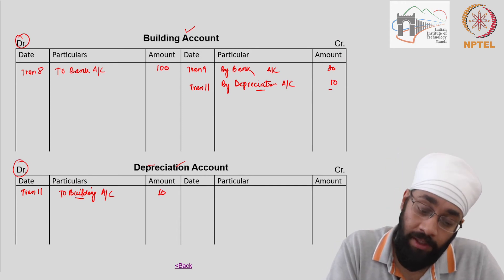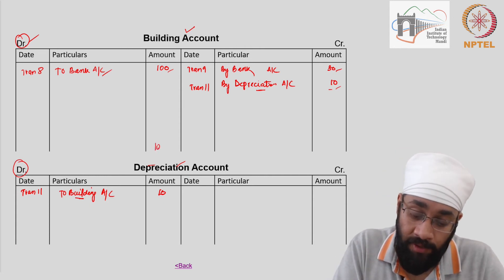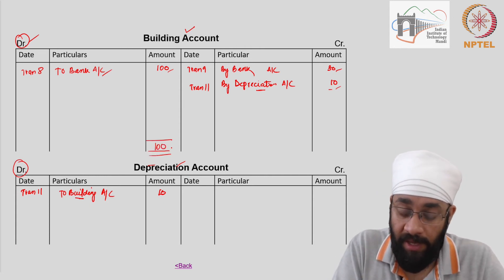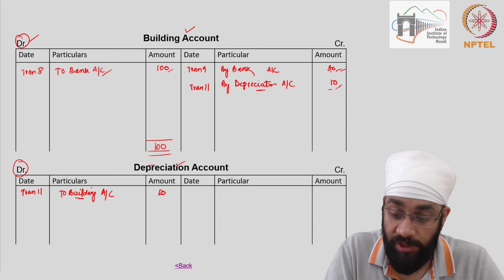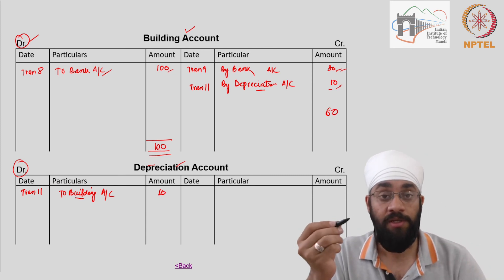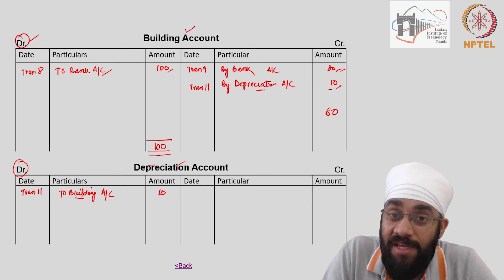So building account - on the debit side you have a payment that you made and you purchased building worth 100, and then you sold the building and there was some depreciation as well. So you have 100 as the total building purchased, but some building has been sold and value of building has gone down due to depreciation. So the balance left in the building account is about 60. So book value of building is 60 at the end of the 14 transactions.